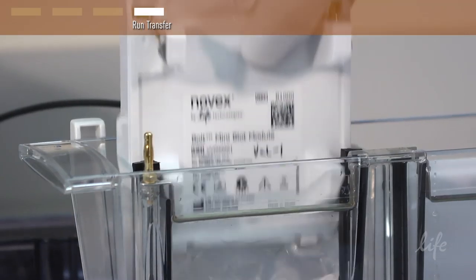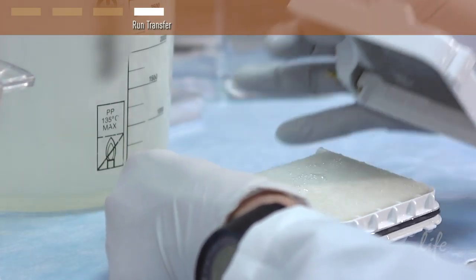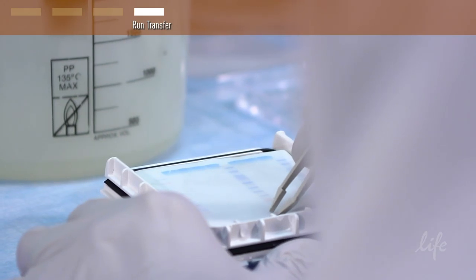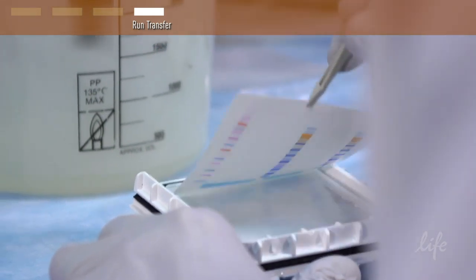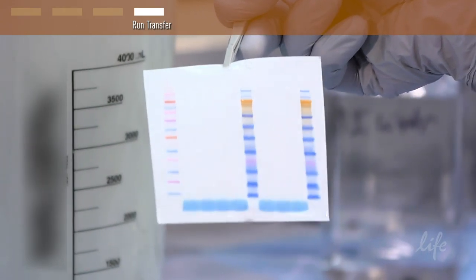After the transfer is complete, remove the module, pour out buffer, and disassemble the module. Recover the membrane using tweezers. As you can see, the transfer looks great. You are now ready to probe your membrane for Western analysis.